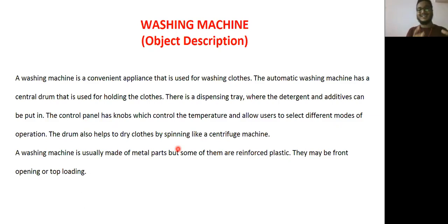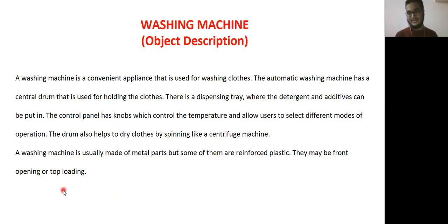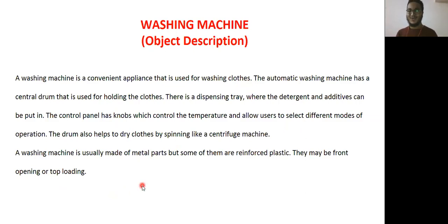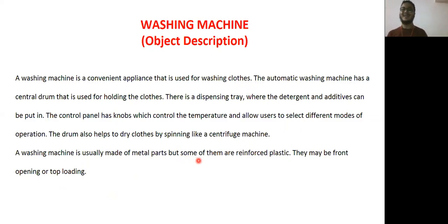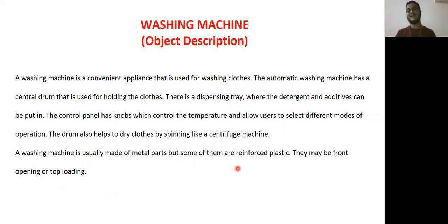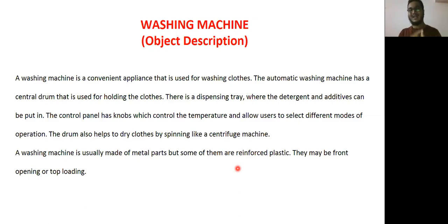This is the introductory line, the body part, and there's a concluding line. You might write two lines for the introduction and two lines for the conclusion — two to three paragraphs overall. The washing machine is usually made of metal parts; some are reinforced plastic. They may be front-opening or top-loading — two positions for using the washing machine. I hope the idea is quite clear.